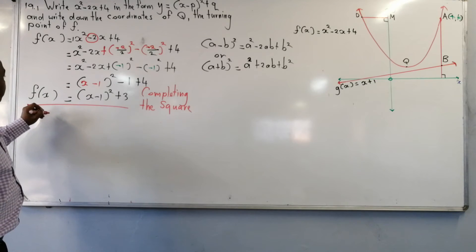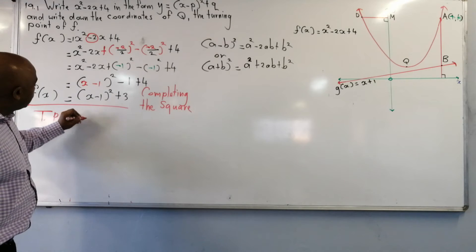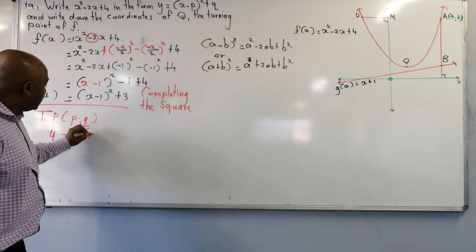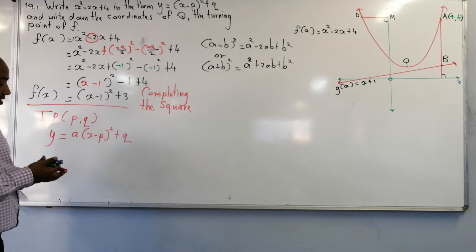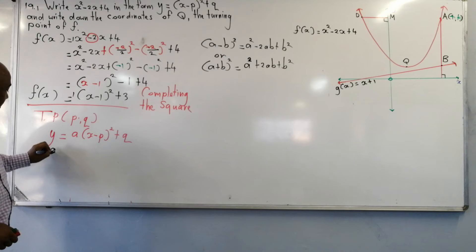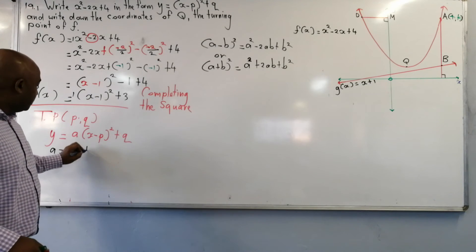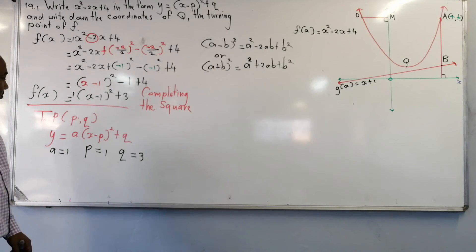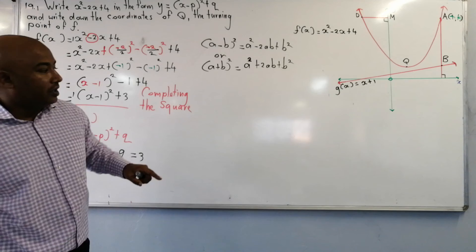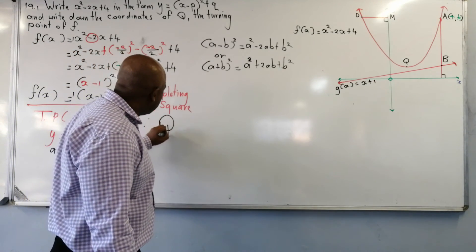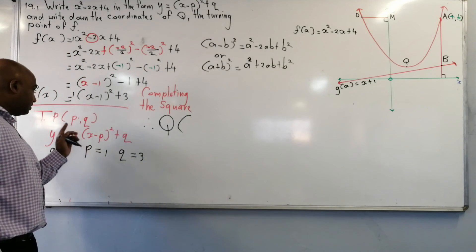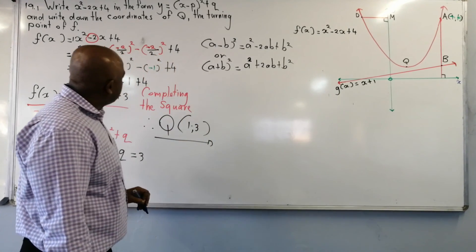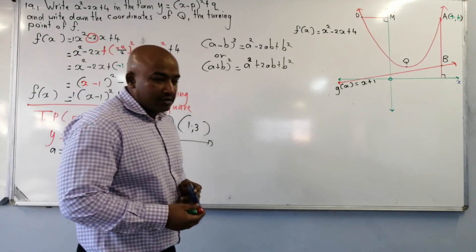Write down the coordinates of the turning point. Remember, your turning point is (p, q) when your equation is in the form y equals a times x minus p all squared plus q. Comparing: a is 1, p is 1, and q is 3. Therefore, the turning point Q has coordinates (1, 3). Mastering completing the square is what you need.